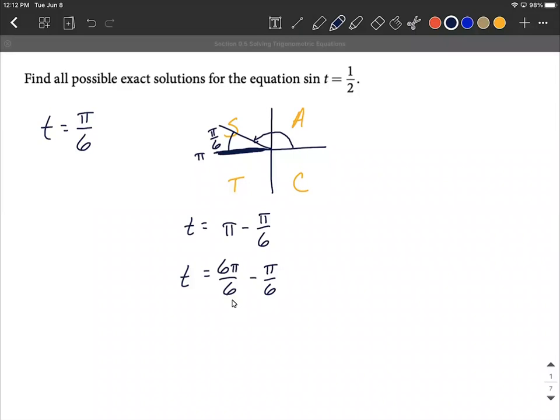We want to have a common denominator to combine these fractions together. And what we're going to get here is five pi over six. And you may be saying to yourself, okay, that's it. We found one in the first quadrant, found one in the second quadrant, but we want to find all the possible exact solutions.